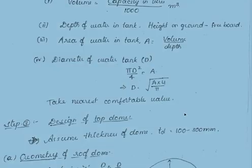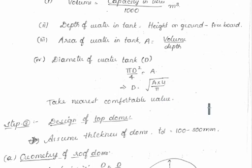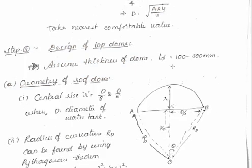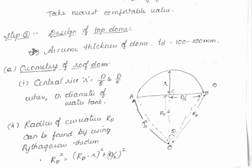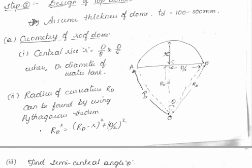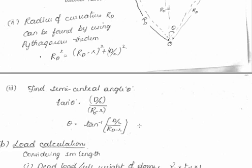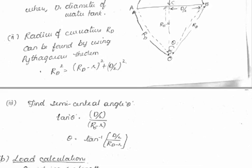Next, design the top dome. Assume the thickness of the dome td is equal to 100 to 300 mm. For the geometry, central rise can be assumed between D/8 and D/5, where D is the diameter of the water tank. The radius of curvature Rd can be found using the Pythagorean theorem: Rd² equals the sum of the two sides squared. The semi-central angle θ is found from tan θ = (D/2) / (Rd − r), giving the value of θ.